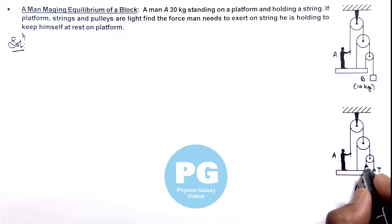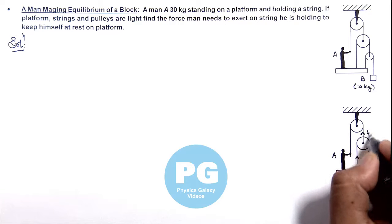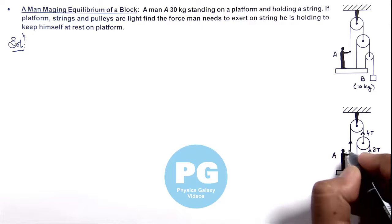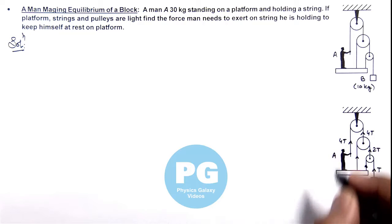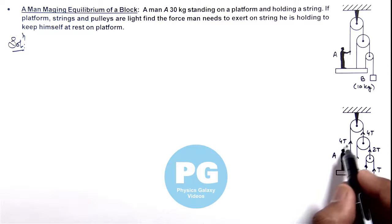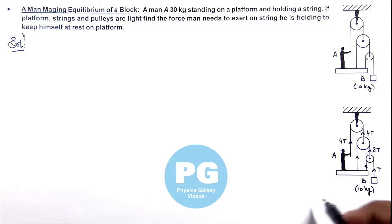For ideal pulley system, tension in this string will be 2T, here also it is 2T, and tension here will be 4T. On the hand of man also the tension acting is 4T, so he has to apply a force of 4T newtons on this string to keep himself at rest on the platform.